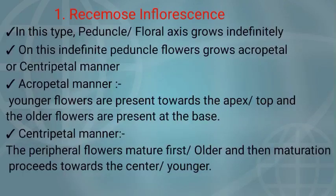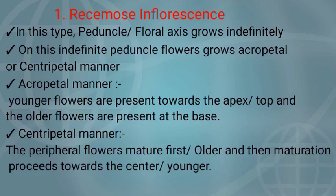The very first one is racemose inflorescence. In this type, the peduncle or floral axis grows indefinitely, which means continuously. On this indefinite or continuous peduncle, flowers grow either in acropetal or centripetal manner. In acropetal manner, younger flowers are present towards the apex or top and the older flowers are present at the base. In centripetal manner, peripheral flowers are older or matured flowers, while the center region flowers are younger or going to mature.